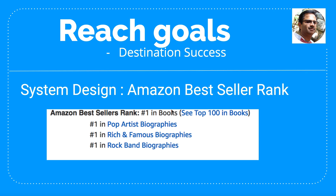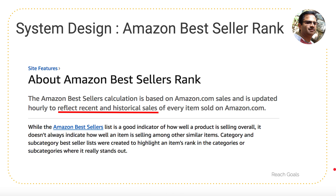If you're not familiar with what BSR is, you can see the small widget on the screen. If you go into the product description page of Amazon and scroll a little bit down, you can see it at the bottom. Basically, it provides the best-selling product in certain categories. According to Amazon, the best sellers calculation is based on Amazon.com sales and is updated hourly to reflect recent and historical sales of every item sold. This implies they only consider what has been sold earlier and what is happening at this moment.